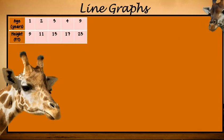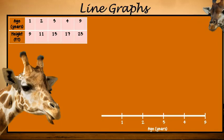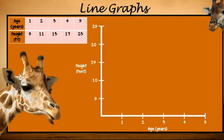So you start with this chart. First, you want the x-axis, which is going to have the time on it — so we have age in years. Then we want the y-axis, that's the height. We have the height in feet, and we'll make our scale by fives to make sure we include all of the points.